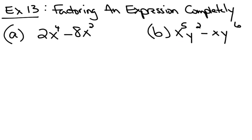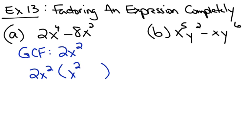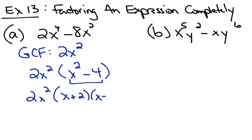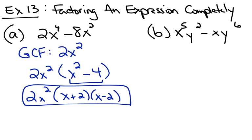Factoring an expression completely is where there are multiple factoring techniques going on in one problem, so you have to be careful. In part a, 2x to the fourth minus 8x squared — the first thing I always look for is the greatest common factor, and both terms can be evenly divided by 2x squared. When you take out a 2x squared, you're left with x squared minus 4. But now this expression is in the form a squared minus b squared, which factors into a plus b, a minus b — in this case x plus 2, x minus 2. So factoring completely can mean a GCF plus one of the special factoring techniques.